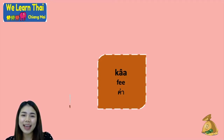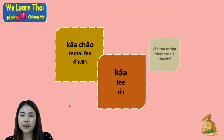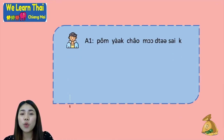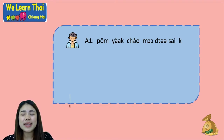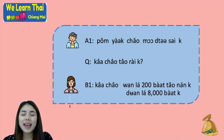Next we have more words using ค่า, which means fee. ค่าเช่า means rental fee, and ค่าโทรศัพท์ means telephone bill. For the situation when you want to rent something, you can say to the owner: ผมอยากเช่ามอเตอร์ไซครับ ค่าเช่าเท่าไรครับ — how much is the rental fee?